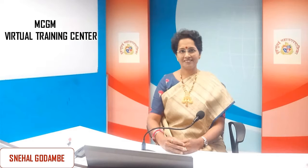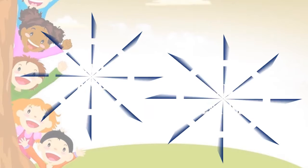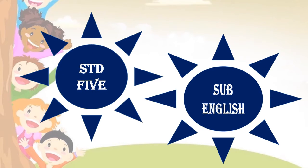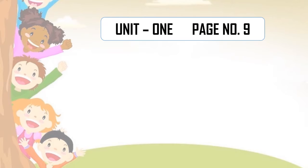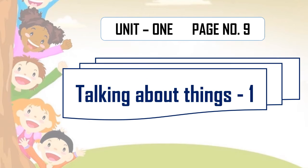Nowadays we are learning from home. So, what is there in today's session? Today we are going to do one activity from page number 9. You all have your English books now — open it and come to page number 9. There is a beautiful activity. The name of the activity is Talking About Things. There are so many pictures you can see on this page, and we have to talk about those things. We have to describe those things — what are they and how are they?